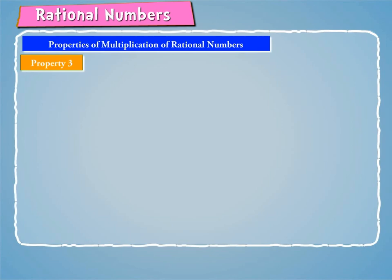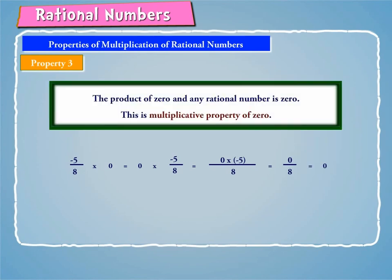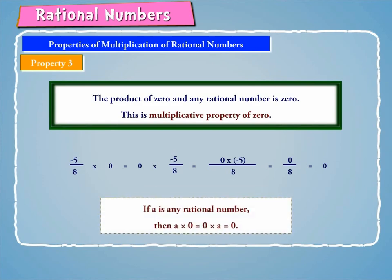Property 3: Let us consider the following example. Minus 5/8 into 0 is equal to 0 into minus 5/8, which equals 0. Hence, the product of 0 and any rational number is 0. This is the multiplicative property of 0. Thus, if A is any rational number, then A into 0 is equal to 0 into A, which equals 0.